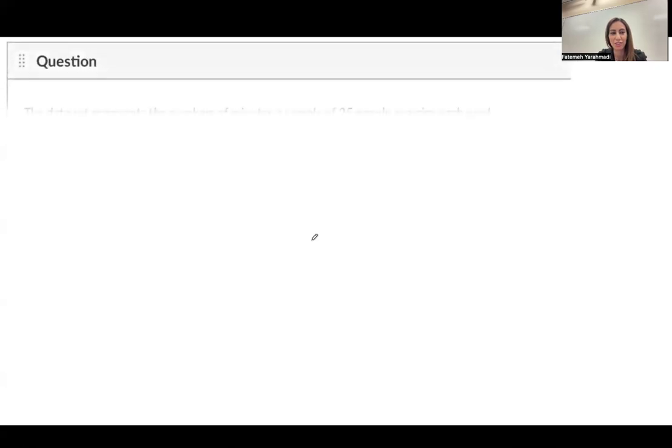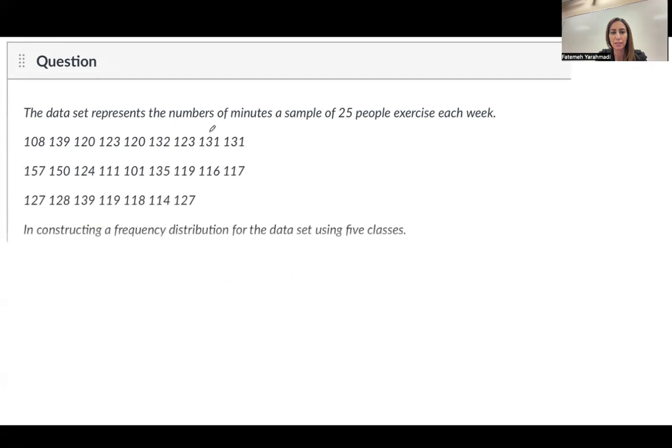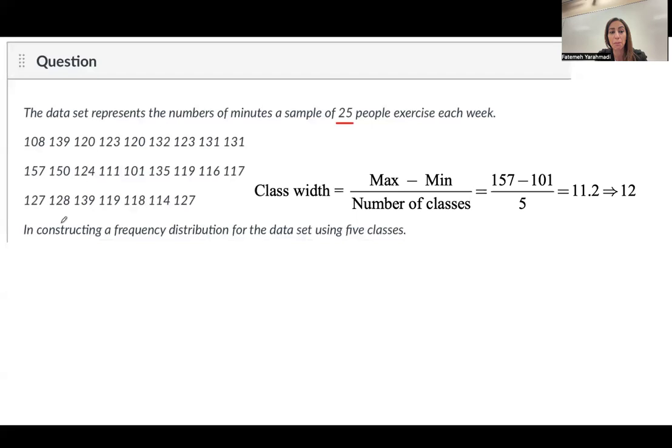Next question. Class width. Class width, as you remember, is the range of the data divided by the number of classes. You have 157, which is the maximum value in your collection, minus 101, which is the minimum value in your collection, and divided by 5 because you have 5 classes. When you do the division, the number is 11.2, but when you're constructing a class width, you always round up to 12. So, here you have your 12.